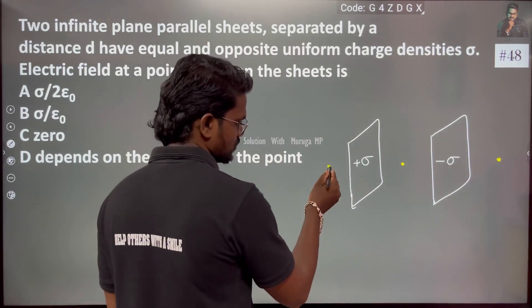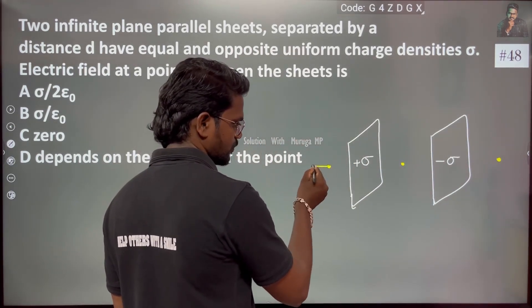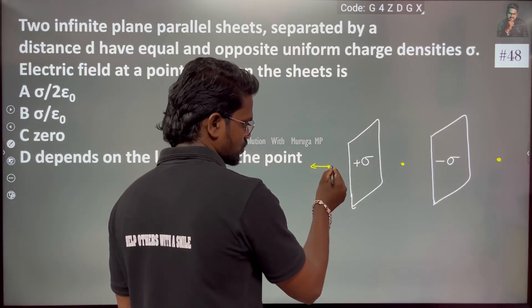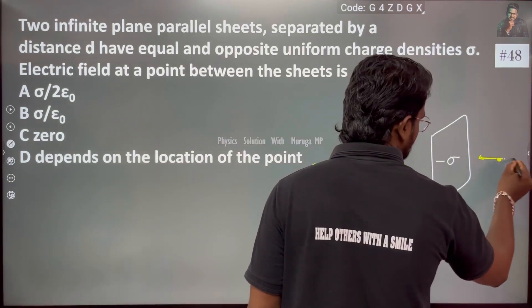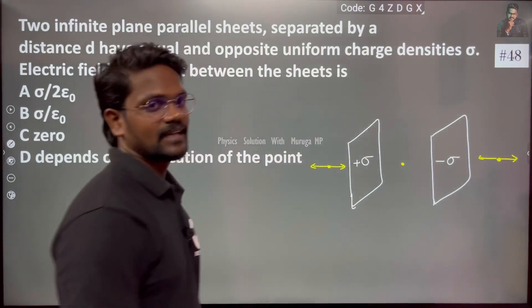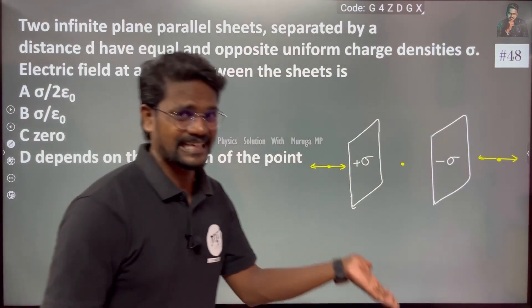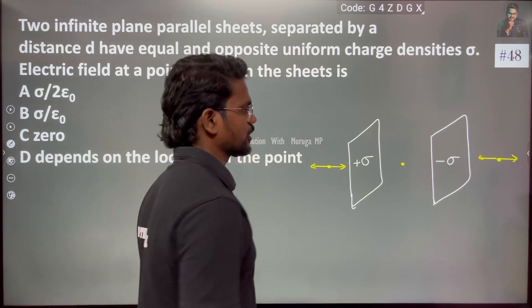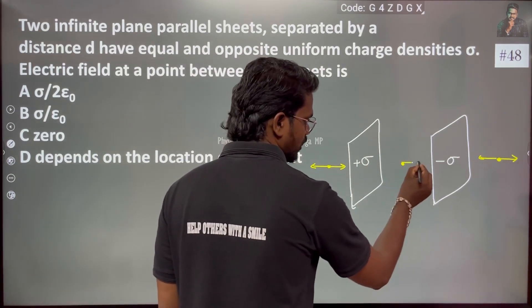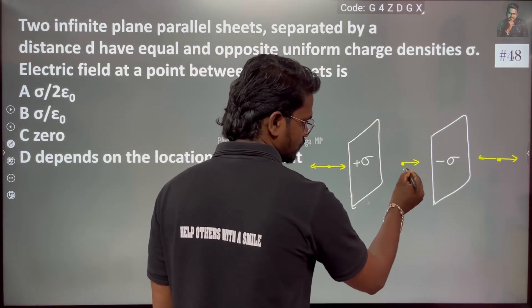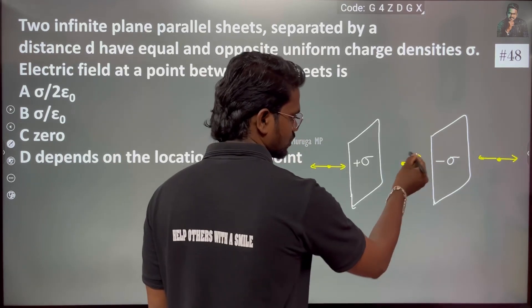In the center point, the positive charge attracts and this is my net electric field. It will be cancelled in the midpoint. The total electric field in between the parallel plate sheets.